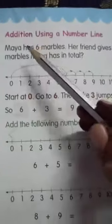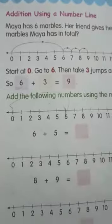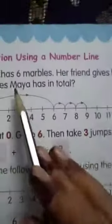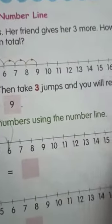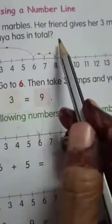Next, addition using a number line. Maya has 6 marbles. Her friend gives her 3 more. How many marbles Maya has in total?